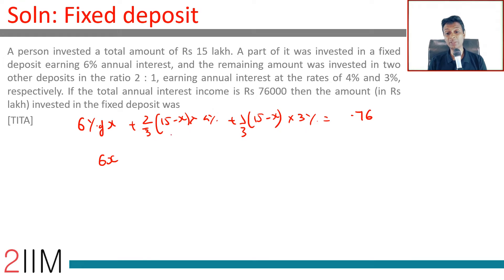I'm going to multiply by 100: 6X plus 2/3 of (15-X) times 4 plus 1/3 of (15-X) times 3 equals 76.